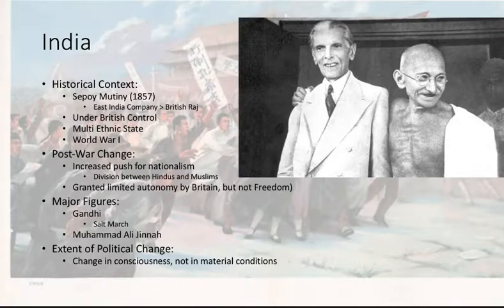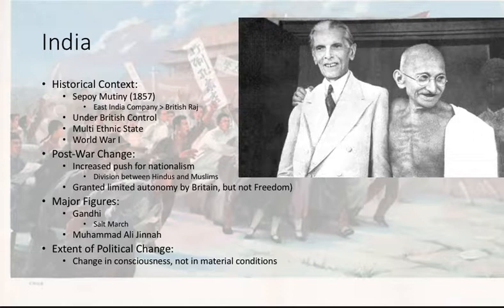Let's take a field trip south and go to India. The last time we left the Indians, they were mutinying against the British in the Sepoy Mutiny of 1857, which saw the dissolution of the East India Company and the establishment of the British Raj. So they're under British control — a multi-ethnic state with many Muslims and many Hindus — and they are involved extensively in World War I, sending many troops to fight with the British. After the war, they argue that since they helped fight for Britain's freedom from autocracy and despotism, they should be freed from autocracy and despotism and granted independence. India is granted limited autonomy by Britain because Britain hears what they're saying, but not total independence.